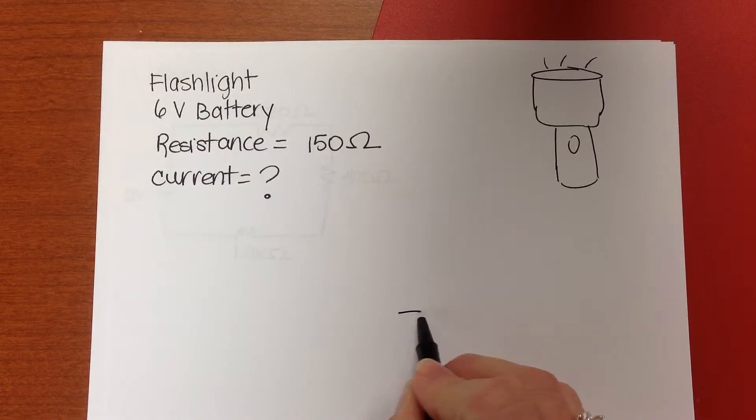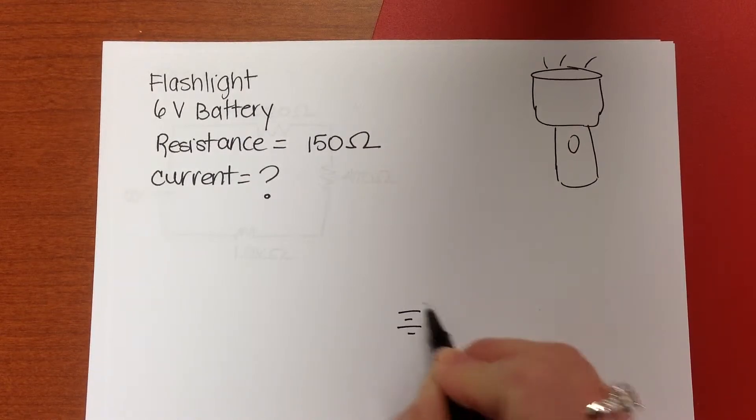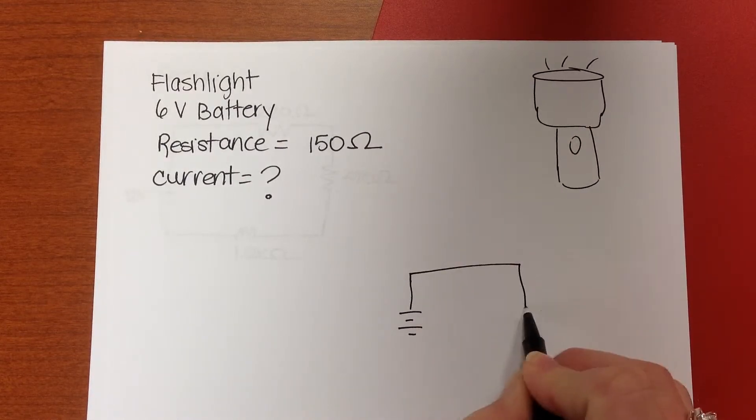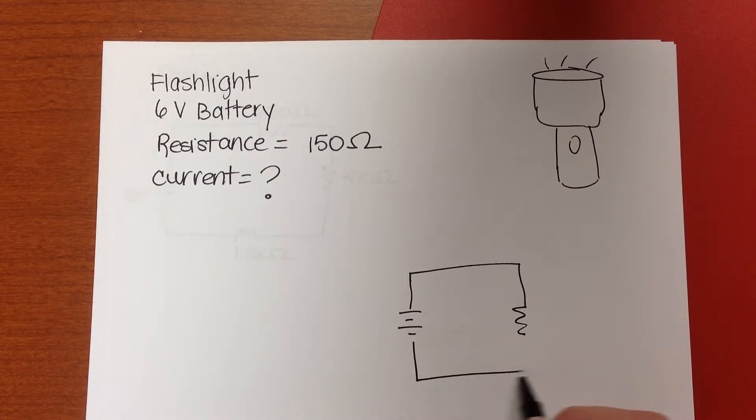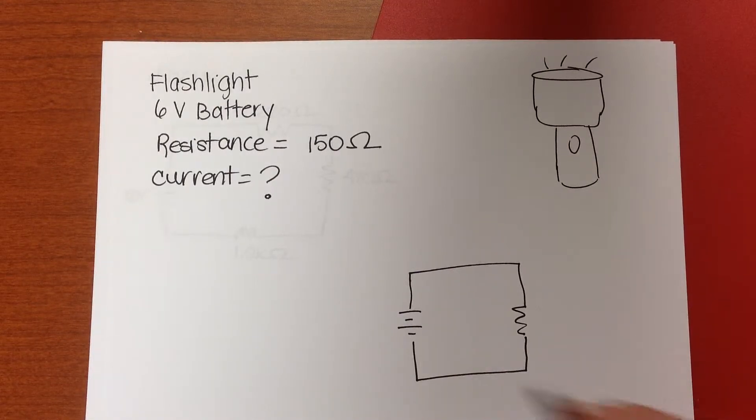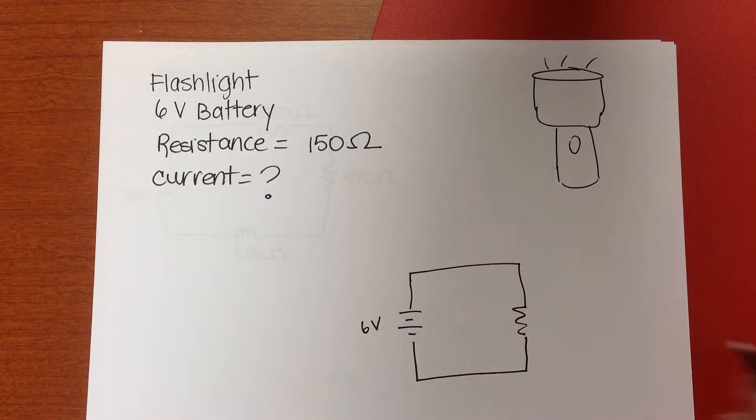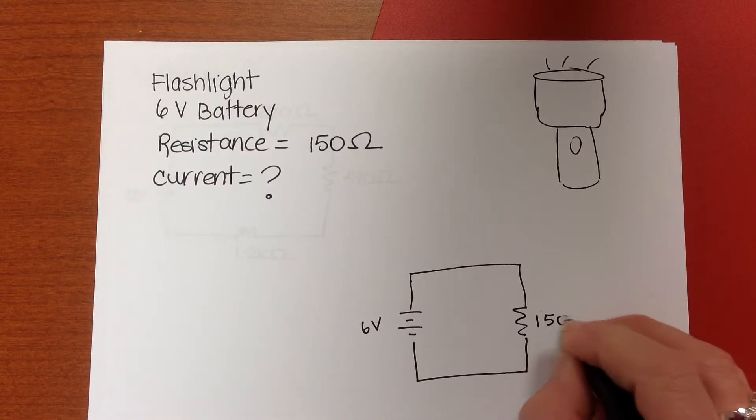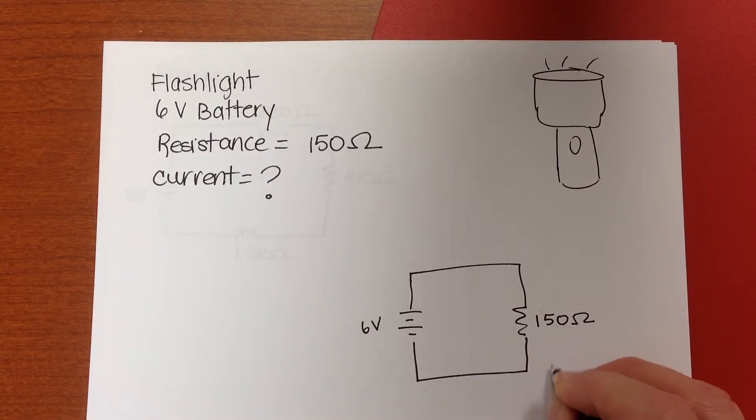So let's draw it as a schematic. This would be our schematic representation. We'll label it 6 volts, 150 ohms, and then we want to know what is I, right?